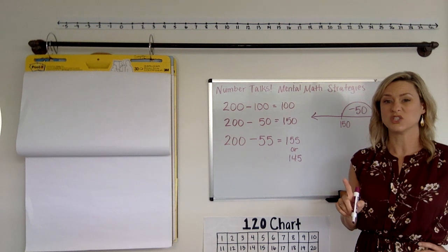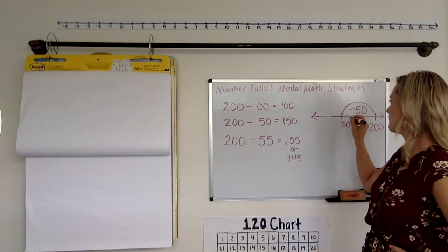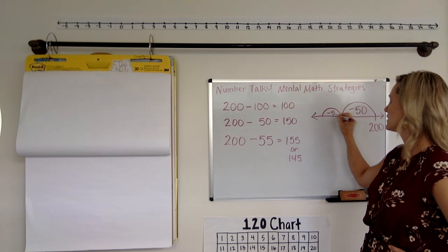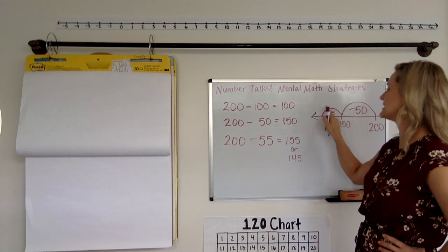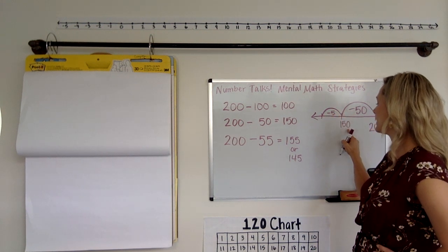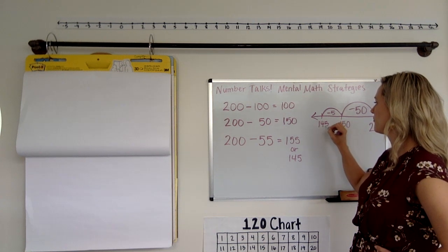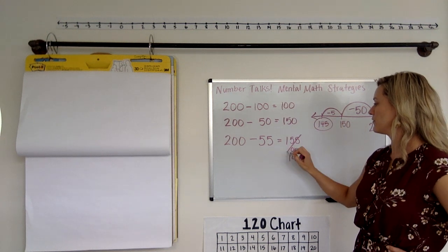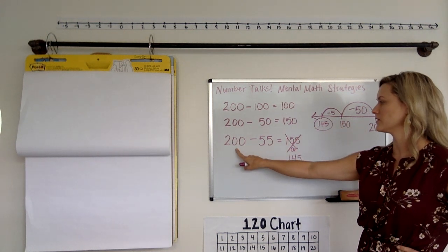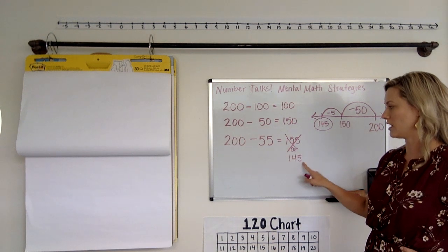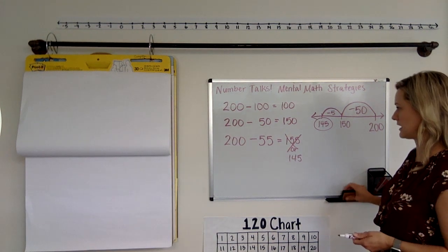And now you have to take off five more. So we have to go down five more. So 150 minus five more would be 145. So our answer would be 200 minus 55 would equal 145. So let's get that on there.